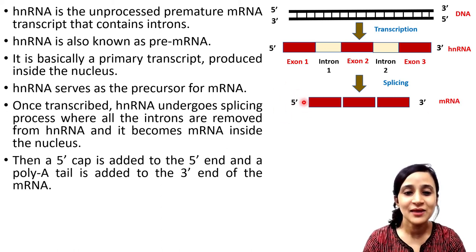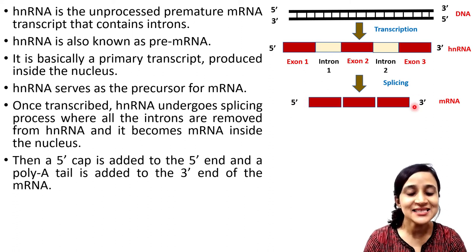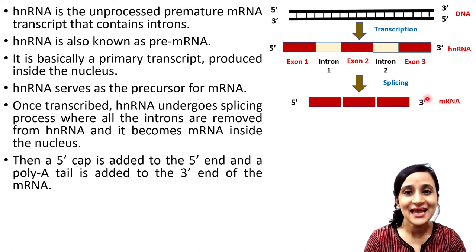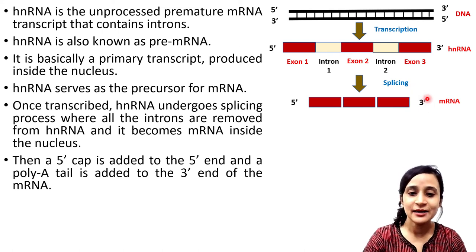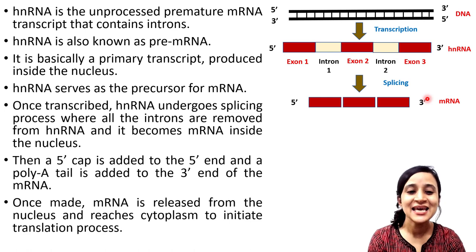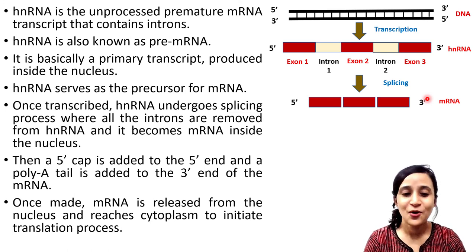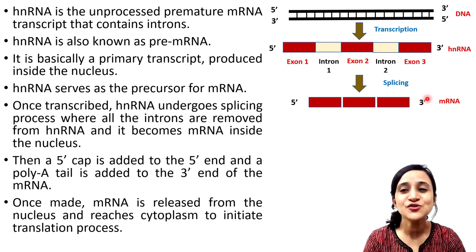A poly-A tail is also added to the 3' end of the mRNA. Once made, the mature mRNA is released from the nucleus and reaches the cytoplasm to initiate the translation process. This is how mRNA is produced from hnRNA.